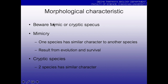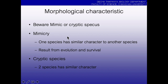Sometimes different species have the same body form, which is called mimic or cryptic species. Mimic means one species has a similar character set to another one, possibly due to evolution or survival. The next one, cryptic species, also means two species have quite similar characters.